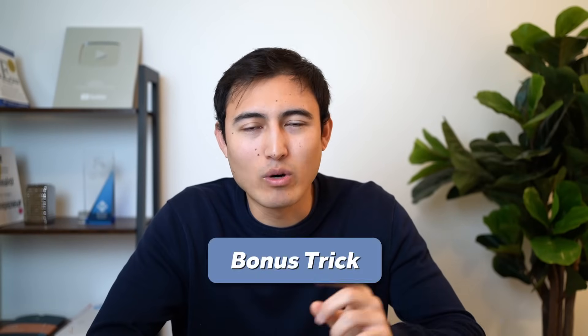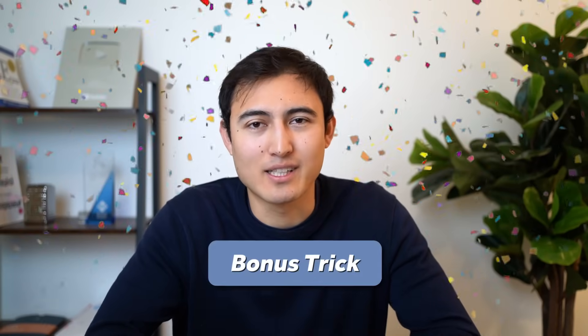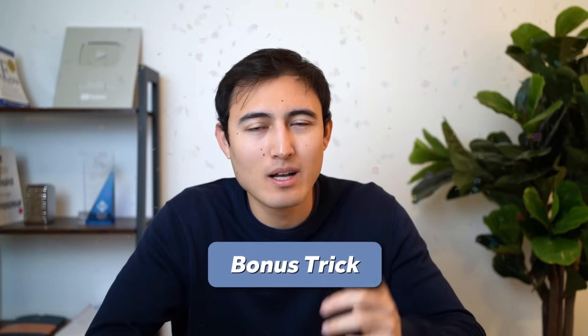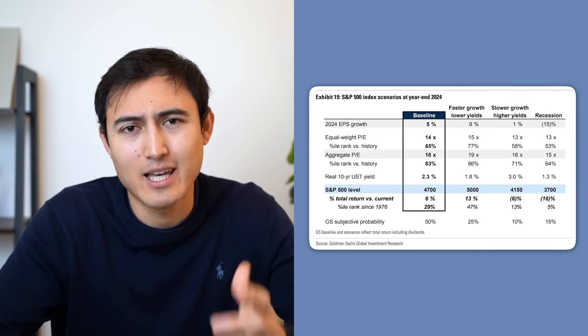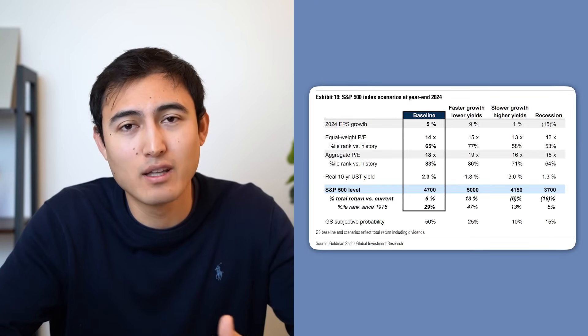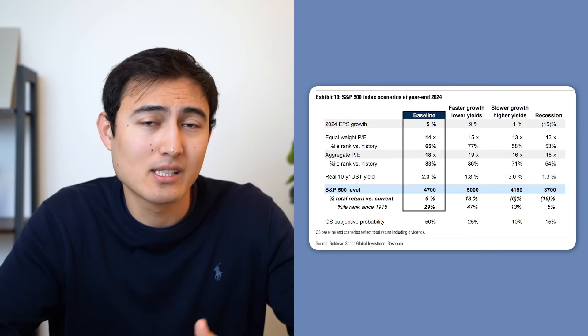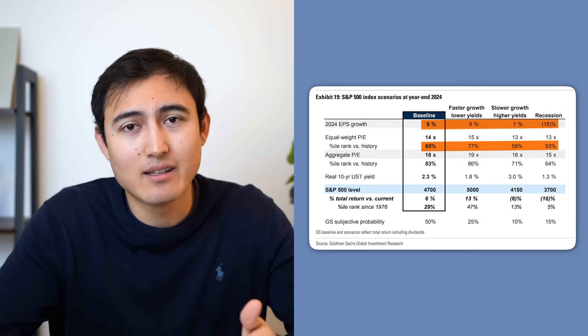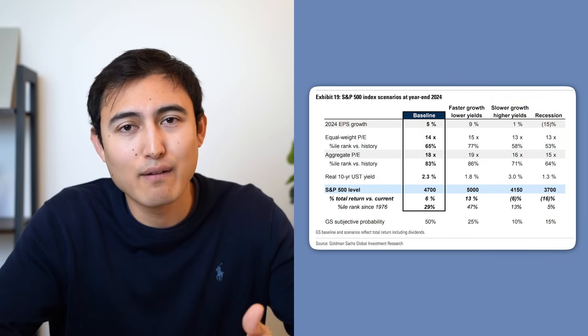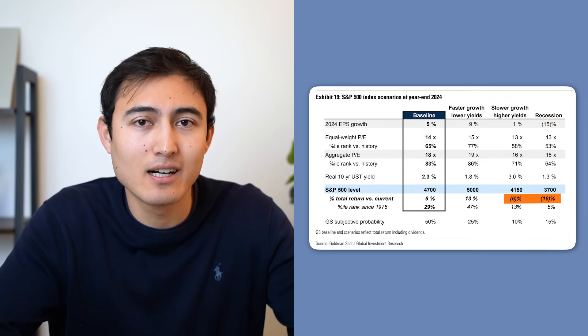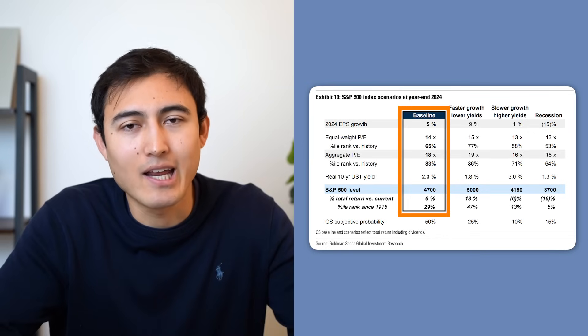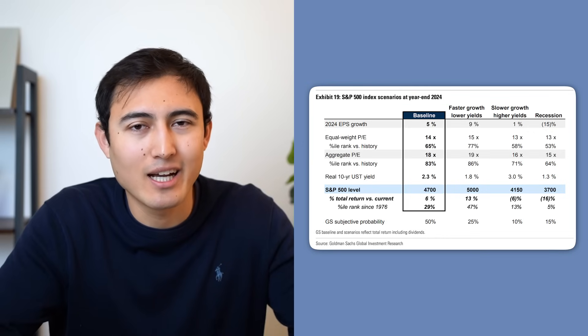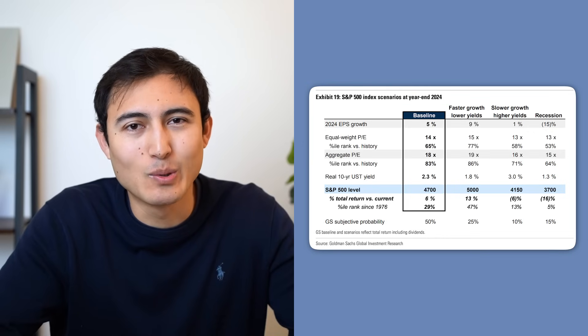At the end of this video we'll cover one bonus trick 90% of Excel users don't know about, but first let's go over this table visual. What makes this one difficult is all the different number formattings — some have 'x' for multiples, others have percentages and negative formats in parentheses — and also the baseline area seems to have a strange highlight.